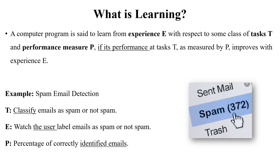Now let's start the unit-wise points. What is meant by machine learning? First, what is meant by learning? Learning basically has three components: experience (E), task (T), and performance measure (P). Let's take the example of spam email detection. We need to classify those things into the three parts — experience, task, and performance.